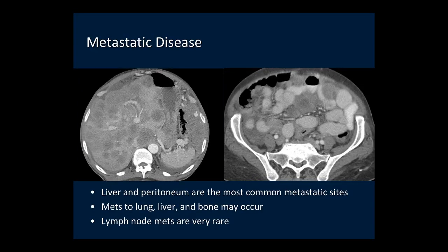The two sites that GIST most commonly metastasize to when malignant are the liver and the peritoneal cavity. Liver metastases appear as hypoattenuating lesions within the liver. Peritoneal metastases appear as nodules and masses in the peritoneal cavity. One exception: metastatic GIST tends not to have abundant ascites, in contrast to adenocarcinoma where ascites is often a predominant feature. GIST can also have distant metastases to the lung, bone, and brain. Lymph node metastases are very rare in GIST.